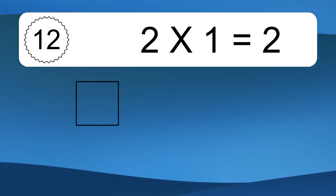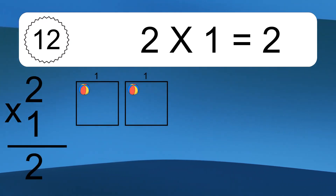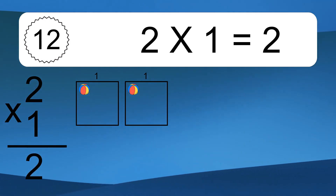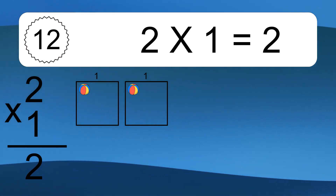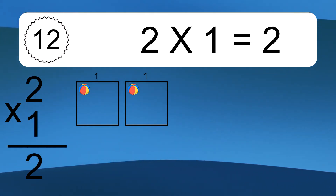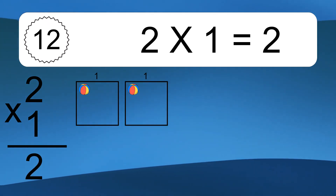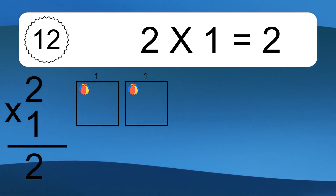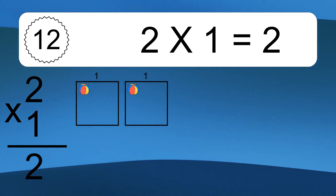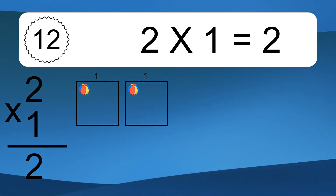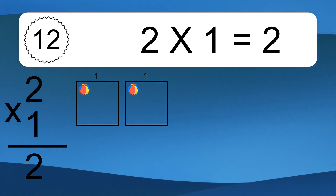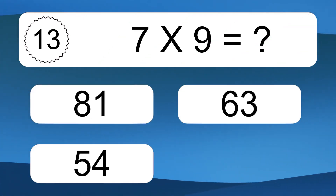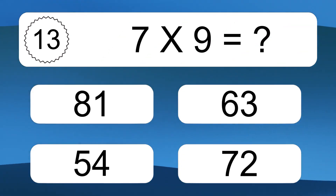2 times 1 equals what? 2 times 1 equals 2. We have 2 boxes and each box has 1 colorful ball inside. If you count all the balls in all the boxes together, you will have 2 times 1 balls. This equals 2 balls.